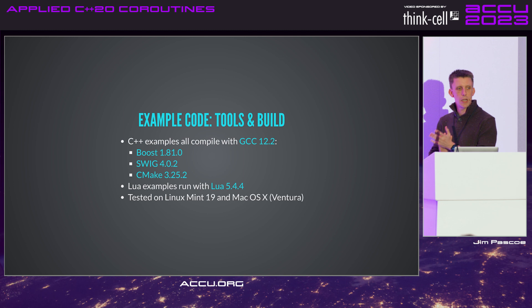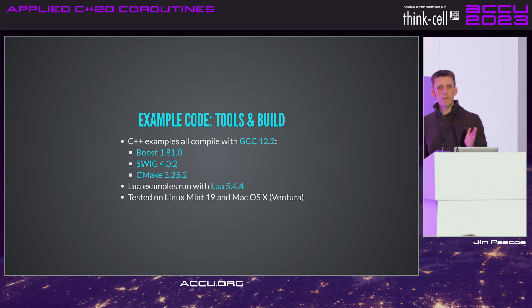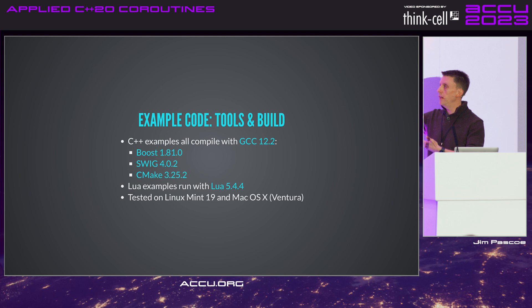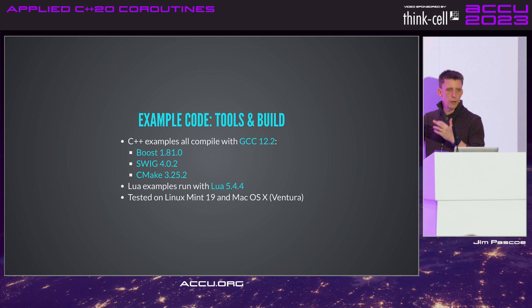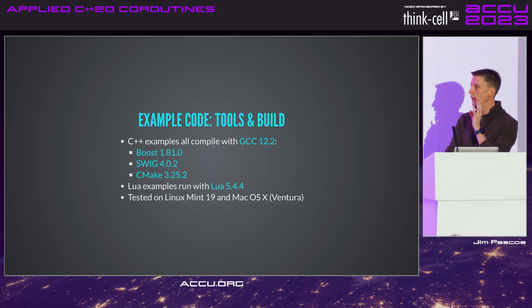Everything is based on Boost 1.81 — Boost 1.82 just came out a few days ago, but all this work was done on 1.81. I'm using SWIG, which is a Lua-to-C++ binding generator. There are others, such as the PhD's Sol3 framework, which is a Lua-to-C++ specific binding — also extremely good. The reason we use SWIG in our company is that you can use it to generate bindings in many different languages — Lua, Python, Go — just by tweaking a few settings.